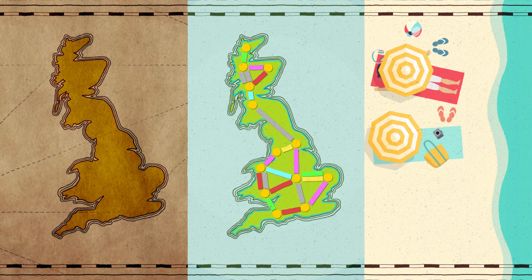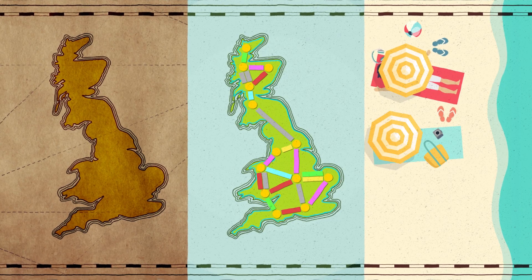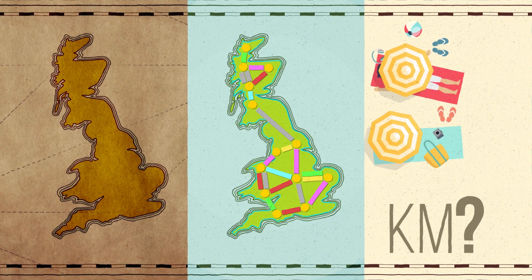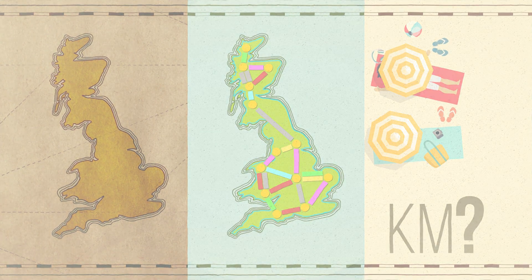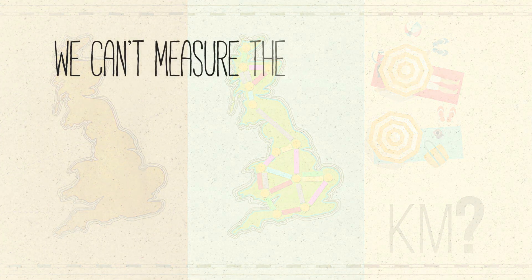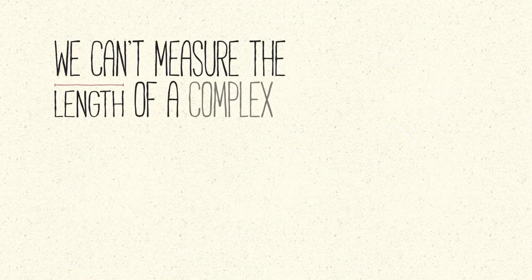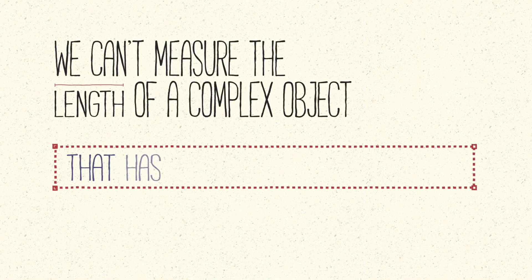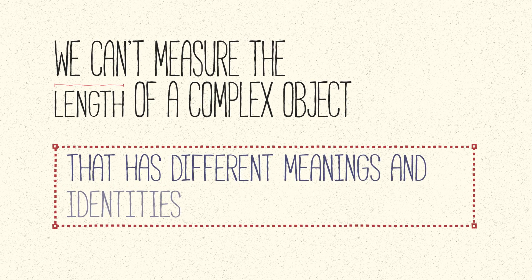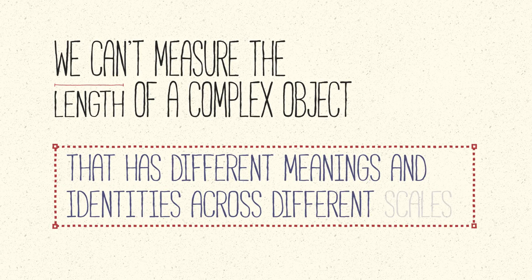If you ask a person who walks on the beach every day, they might tell you that the length of the coastline is not fixed, as it depends on the tide. This is to say we can't measure the length of a complex object that has different meanings and identities across different scales.